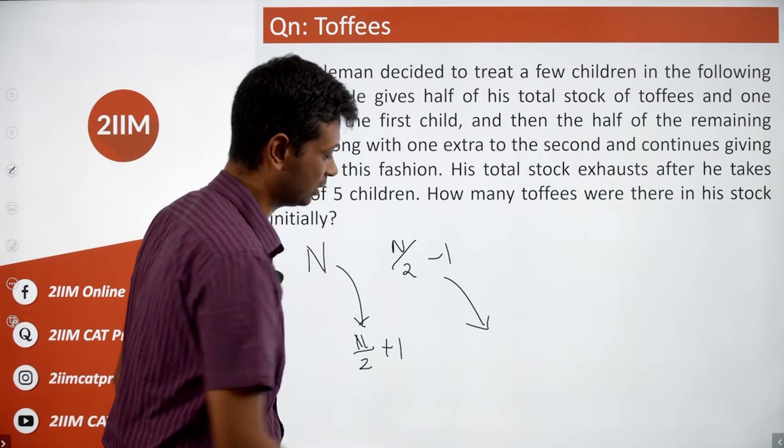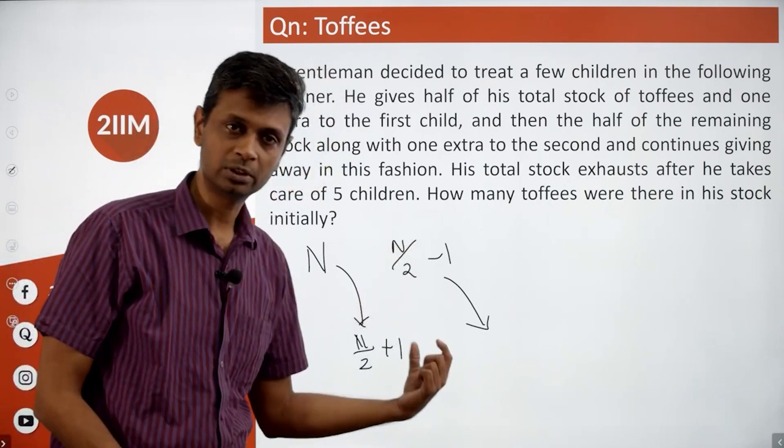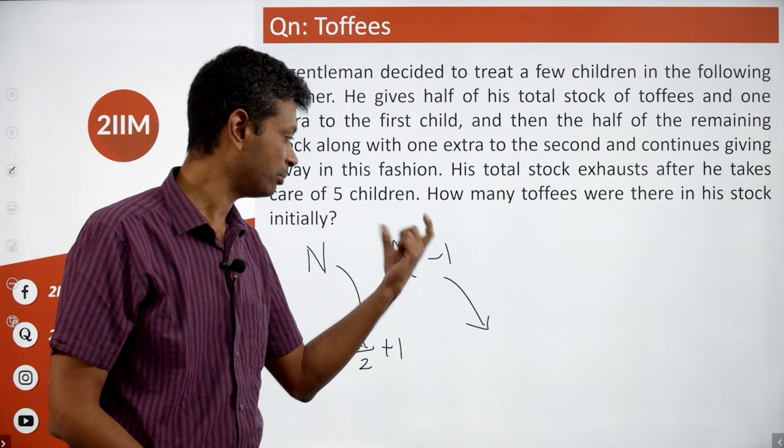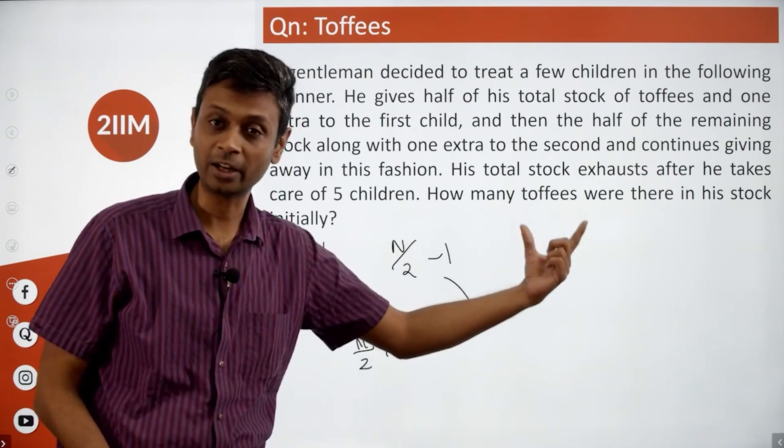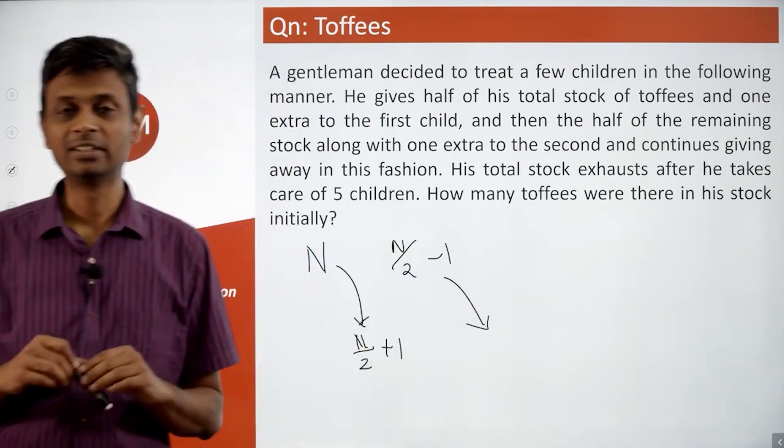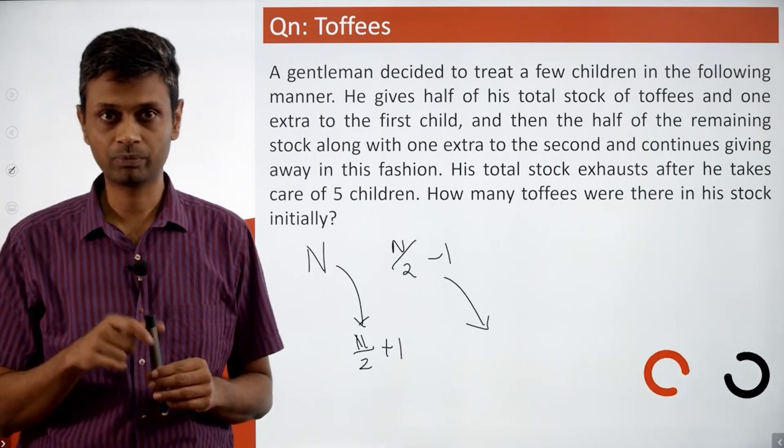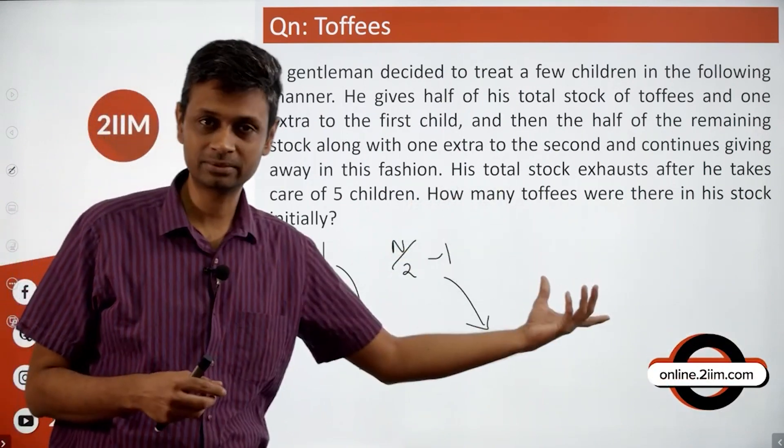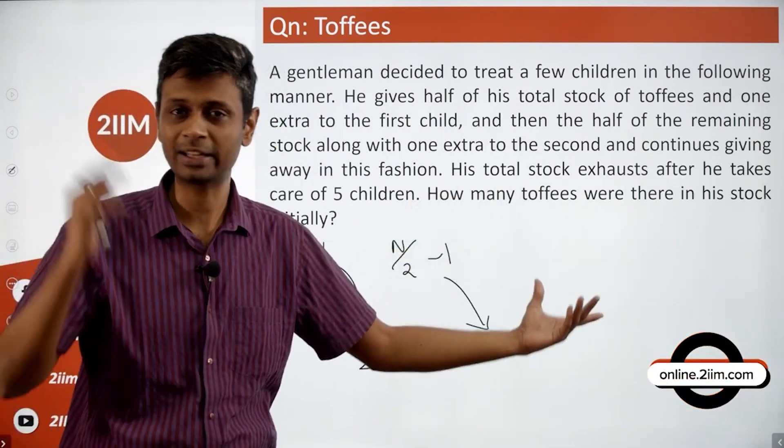Straight away we can sense there'll be an n/4 term sitting here, and then there'll be an n/8, n/8 - 1/4, something like that, right? So n/16... that becomes complicated, right?